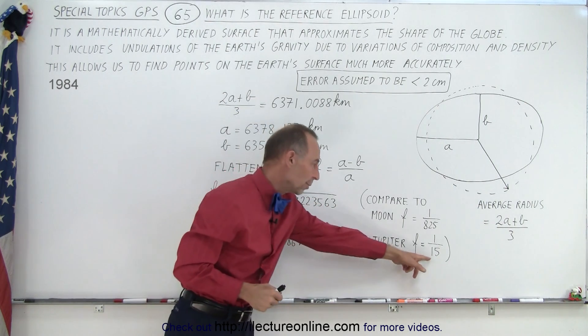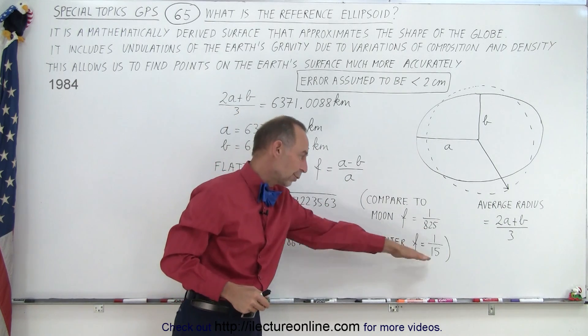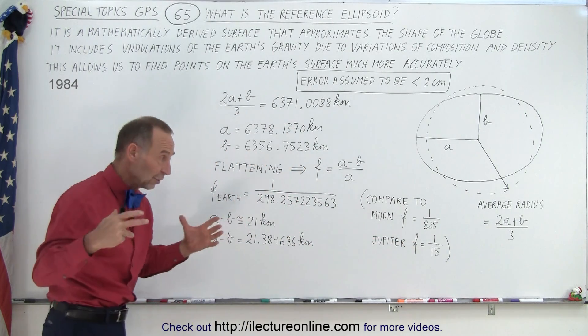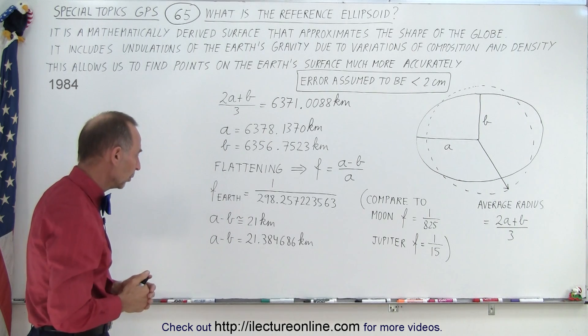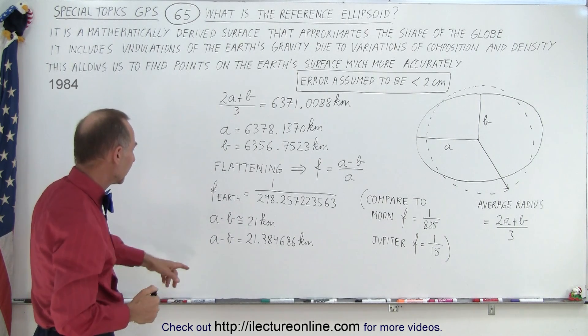For Jupiter, being a gas planet, it's about almost 7% wider than it is tall at the equator versus from pole to pole. Notice again that the difference between the semi-major and semi-minor axis can be found extremely accurate down to the nearest millimeter.